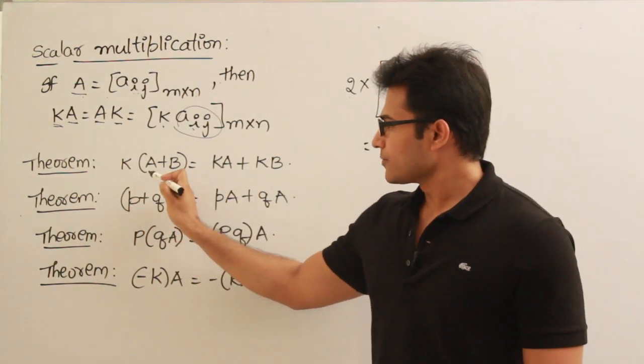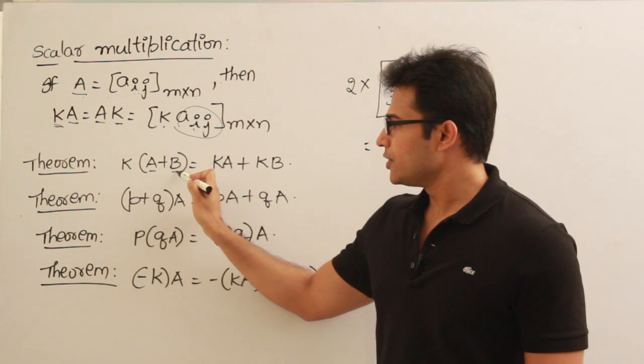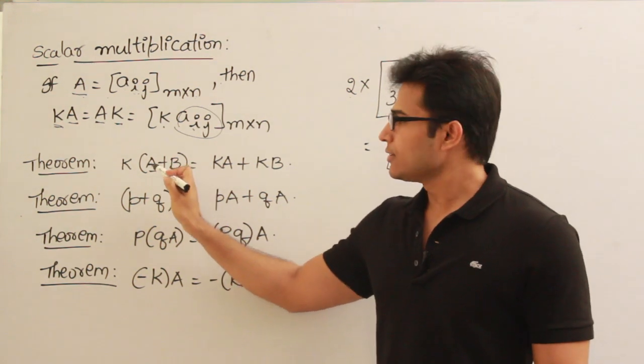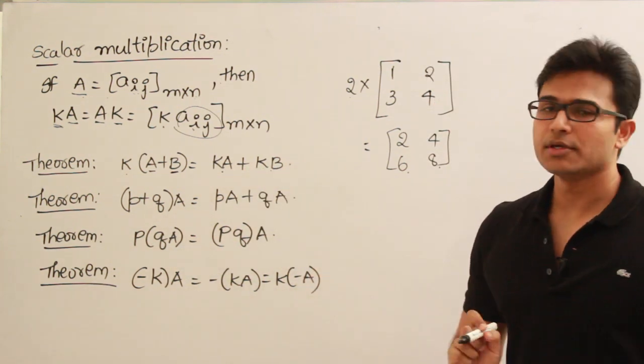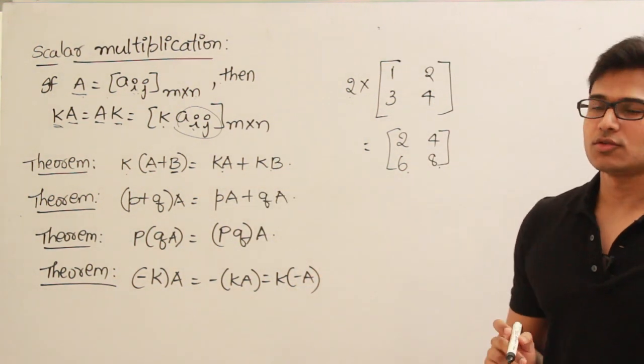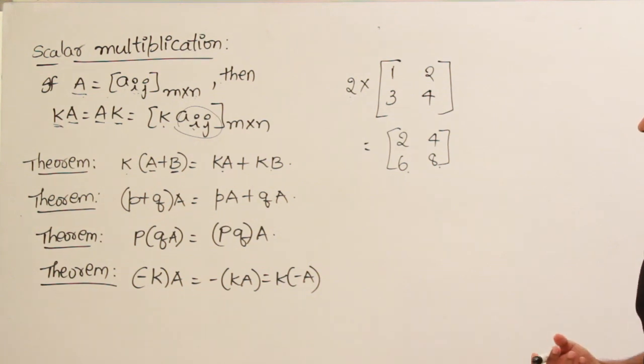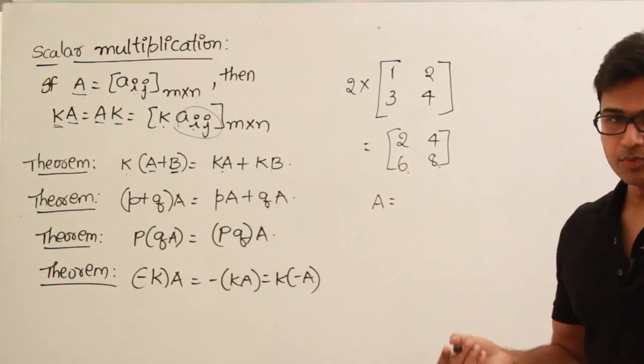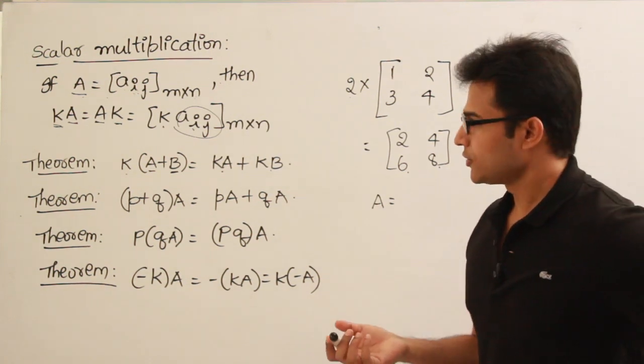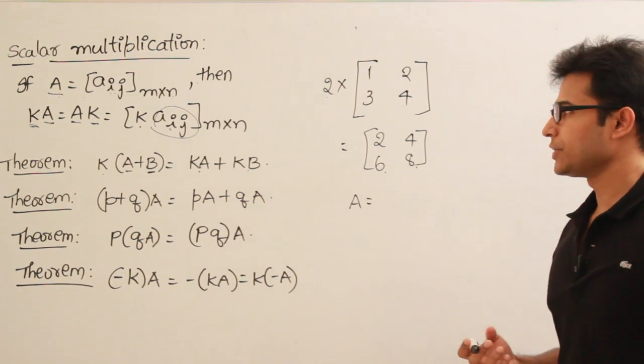And the theorem. Look at this theorem. If A and B are two matrices, then k(A+B) = kA + kB. How did we get this? So you can think of it this way. I am just telling you the proof. Proof is not required. In case you are interested, you can watch it. I will just quickly finish it.